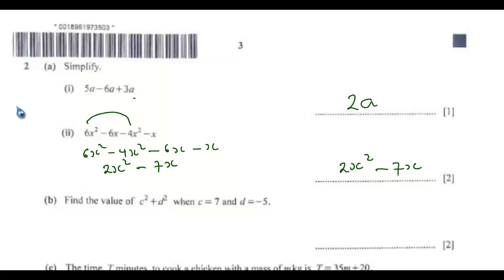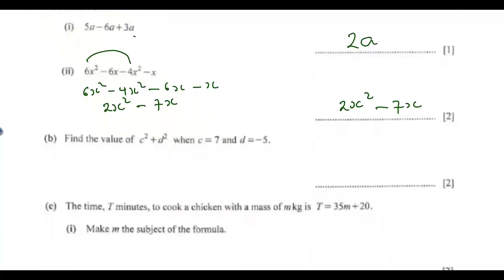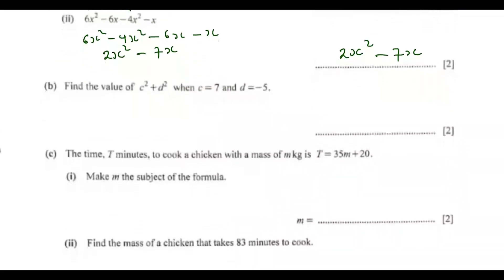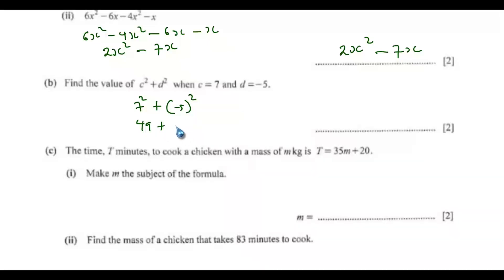Part b: Find the value of c² plus d² when c equals 7 and d equals negative 5. That will be 7² plus (−5)², which is 49 plus 25, giving a final answer of 74.